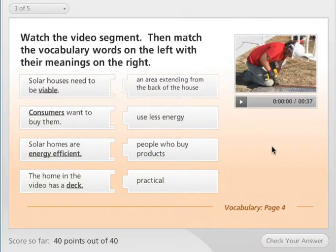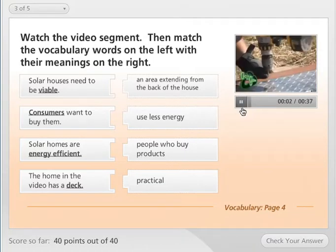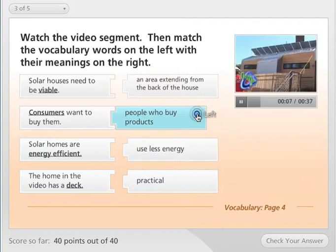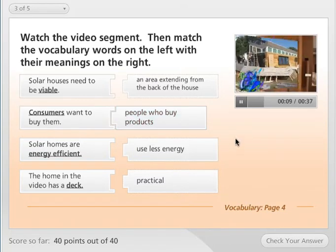Watch the video segment, then match the vocabulary words on the left with their meanings on the right. The houses are judged on ten main points and awards are given for each one, including architecture, engineering and market viability.